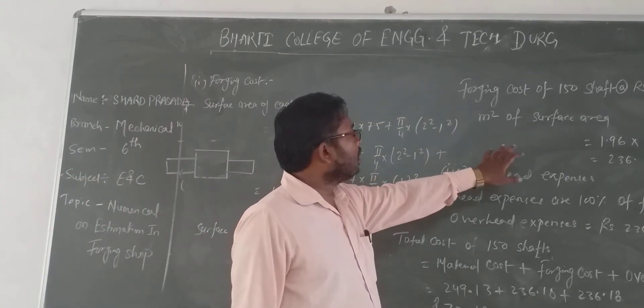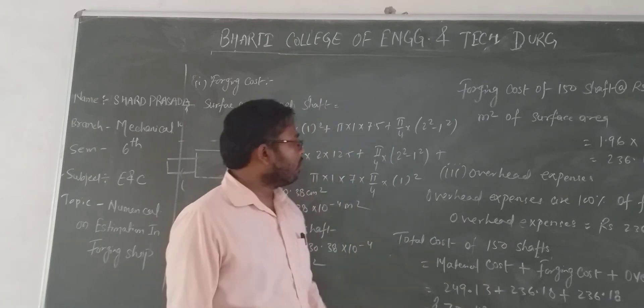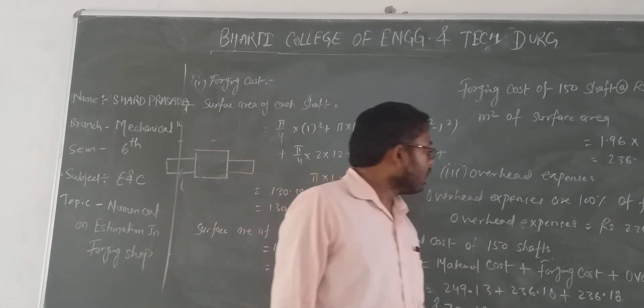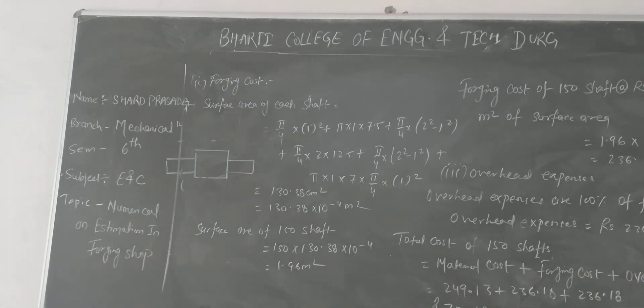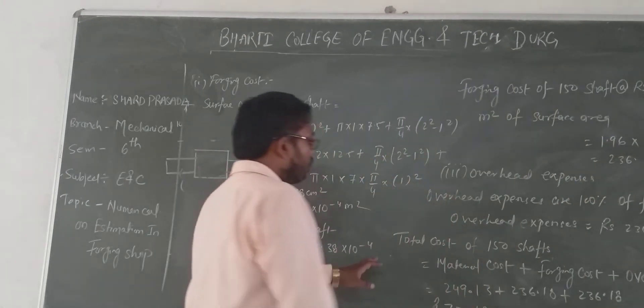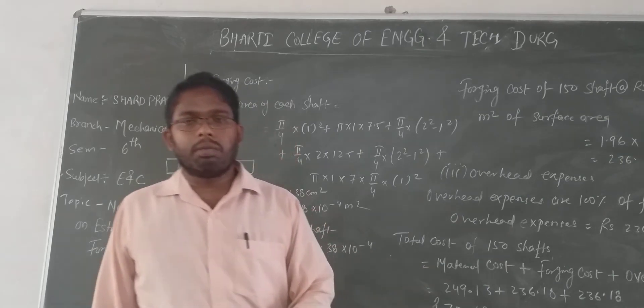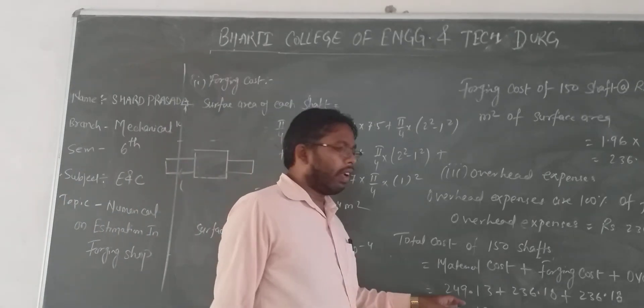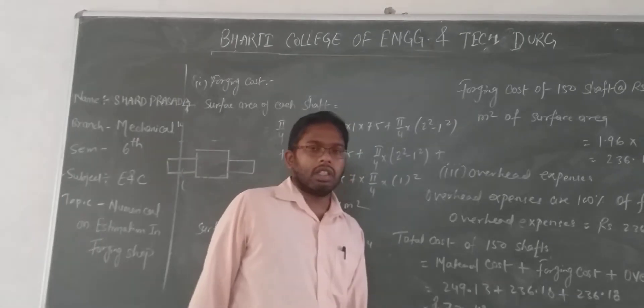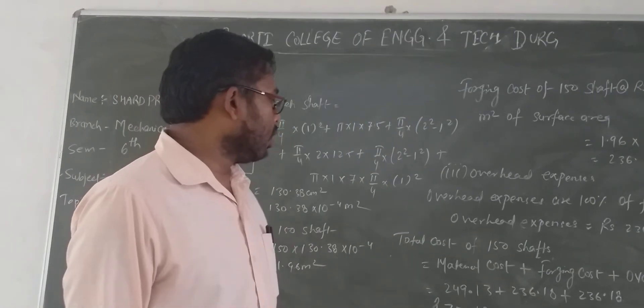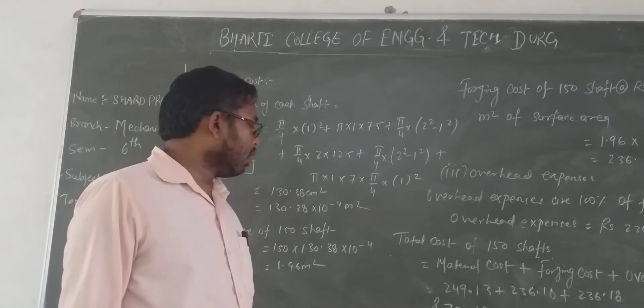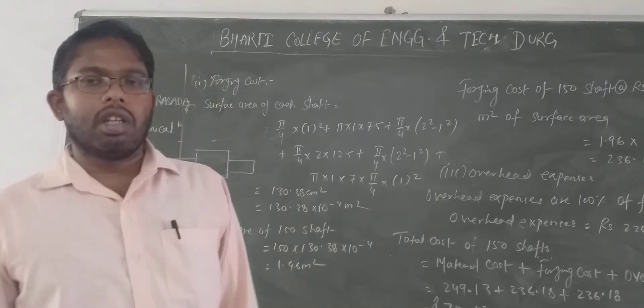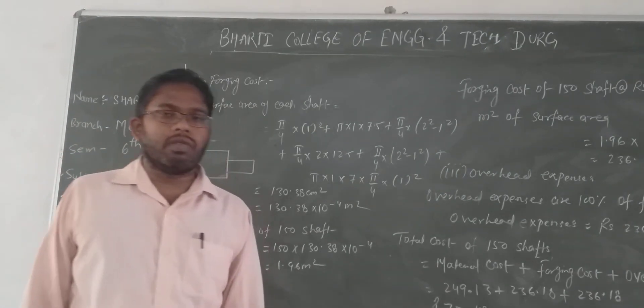The total cost of 150 shafts: material cost plus forging cost plus overhead cost. So 249.13 plus 236.18 plus 236.18 equals 721.49 rupees, the total cost.